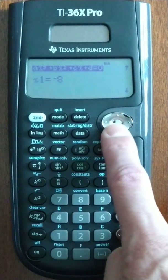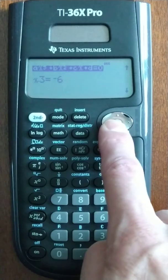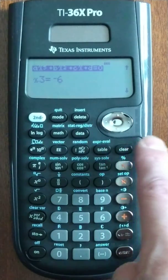First root is negative 8, second root is negative 6, third root is negative 6, so the TI reveals the double root.